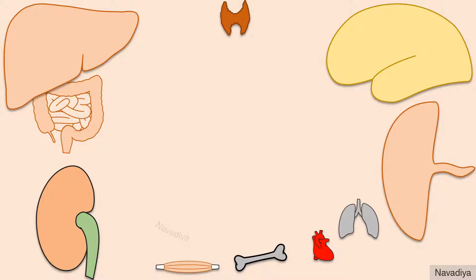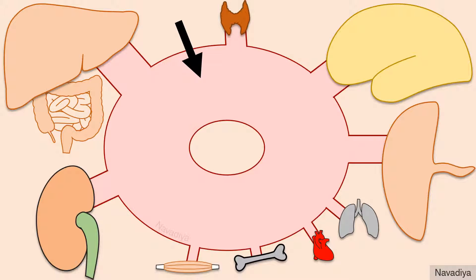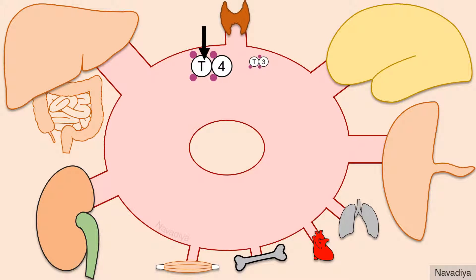These are various organs of our body, and this is circulating blood — a kind of road connecting all the organs. As we have seen in the video of thyroid hormone synthesis, T4 accounts for most of the hormones released from the thyroid gland. To be more specific, it's about 90% of total hormones released, about 10% is T3, and RT3 is very little and inactive anyway.